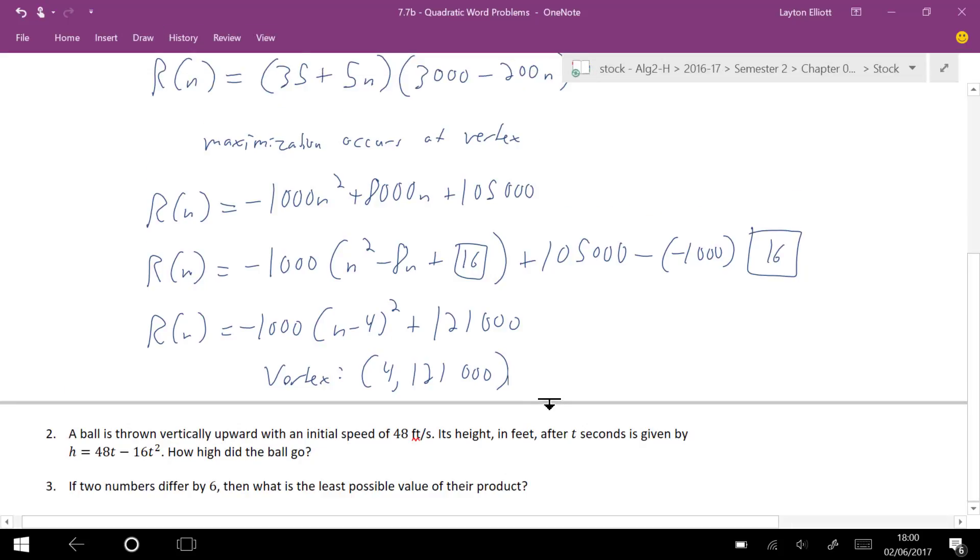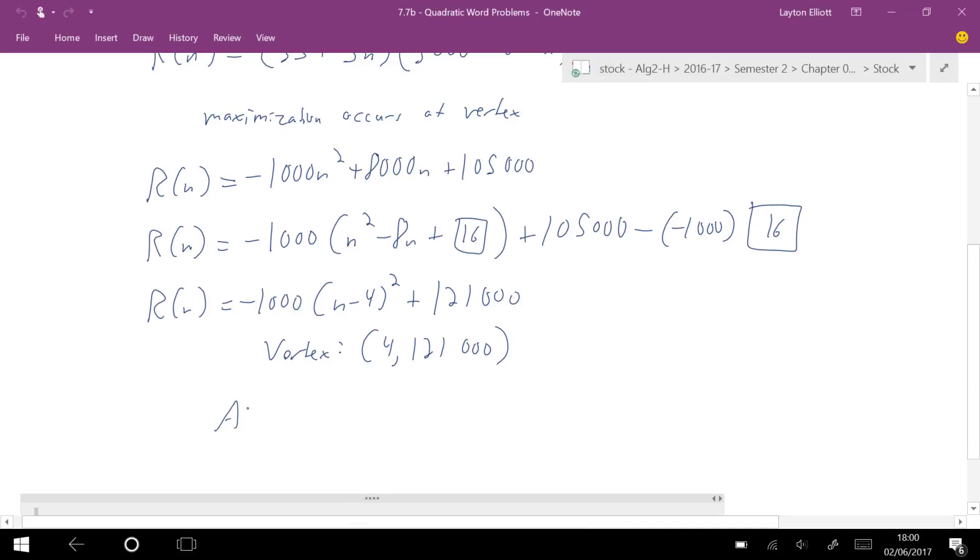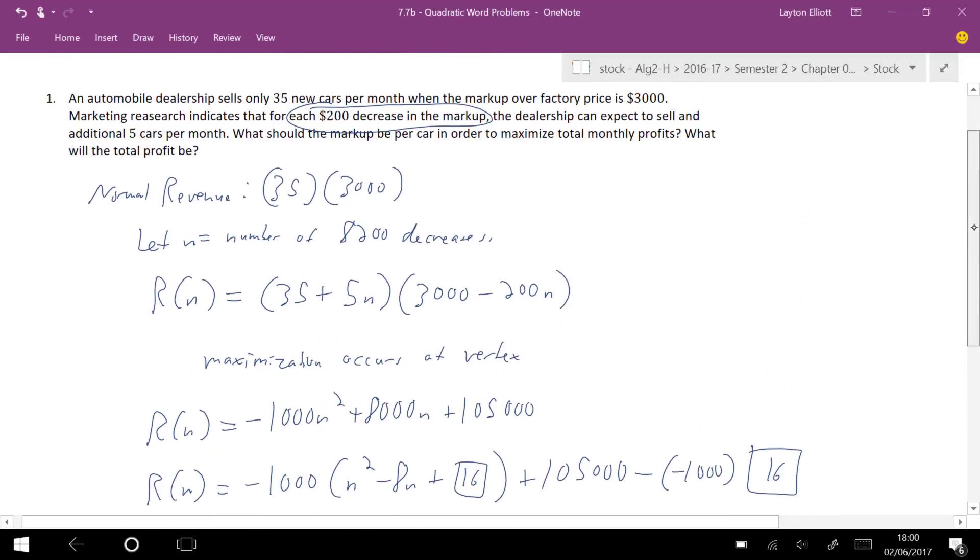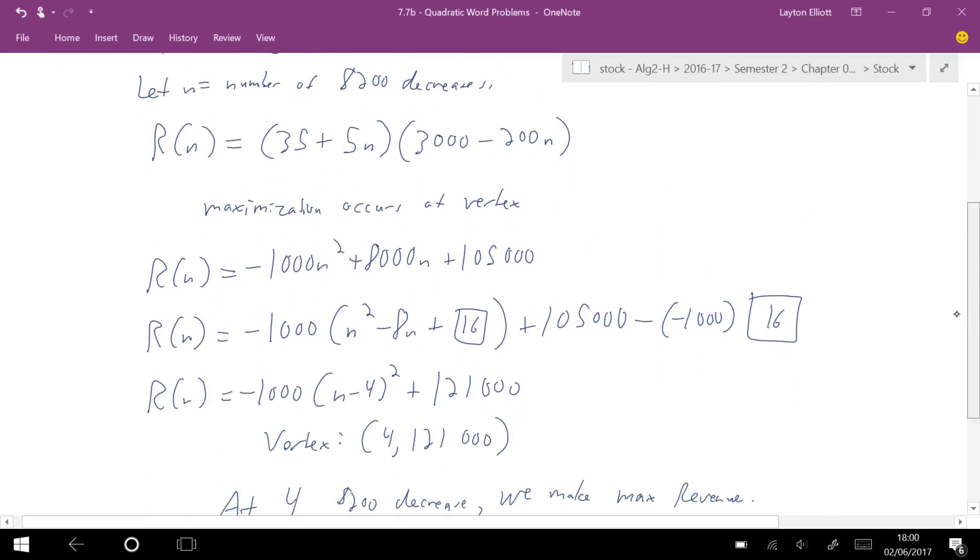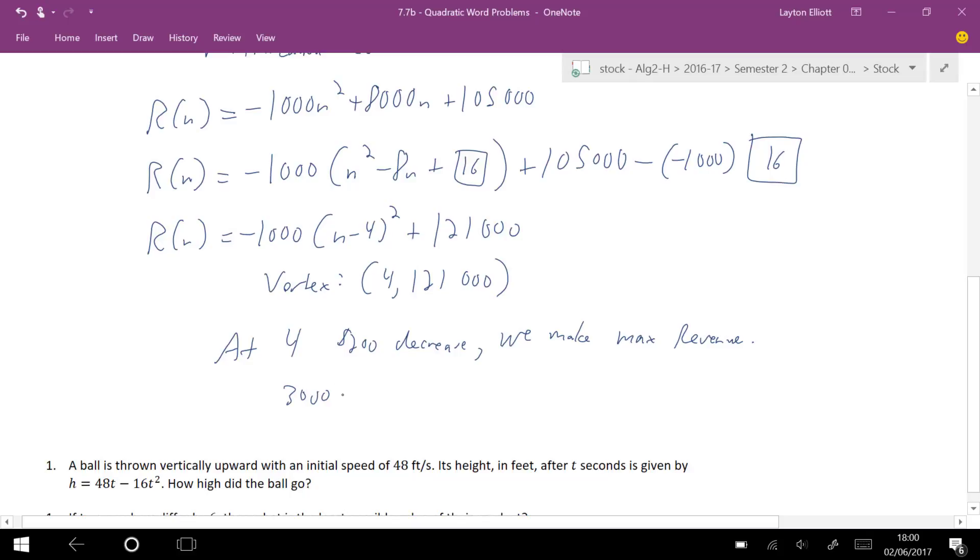And what that tells me is two things. It tells me that at four $200 decreases, we make the max profit, or I should say we make the maximum revenue. So going back to what the question asks, it wants to know what should the markup be per car, and it starts at 3,000, and we subtract 4 times $200. So that would be 3,000 minus 4 times 200 is $2,200. So $2,200 should be the markup, not 3,000 if I want to maximize revenue given the conditions. So that is one way to handle it.